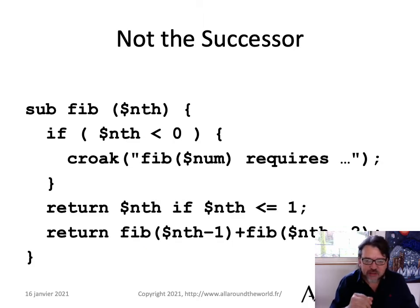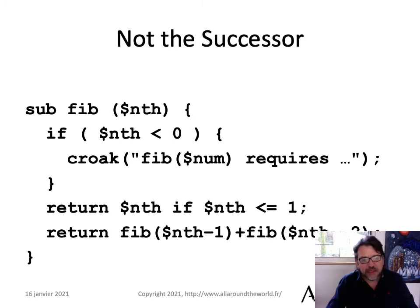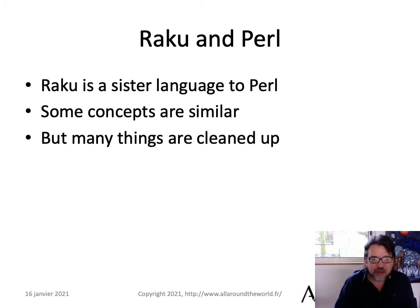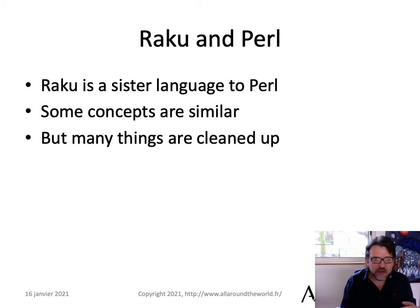Raku was originally announced back around the year 2000, and it was going to be Perl 6 — the successor to Perl. But Raku is not the successor to Perl. We've known for a long time that it can't be, so it was eventually decided to rename the language. Today it's called Raku, to make it clear that it is a separate language from Perl. We like to call it a sister language — it's related to Perl in the way that C# is related to Java. Some of the concepts between the two languages are similar, and if you're familiar with Perl you'll already know a lot of the basics of Raku, but many things in Raku are cleaned up or approached differently to make them easier to use.